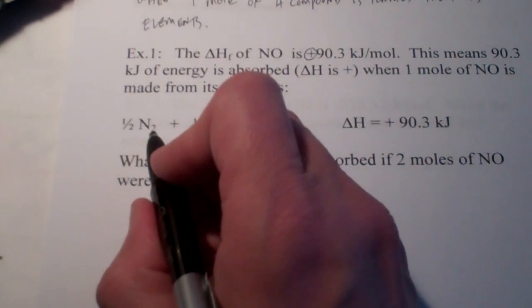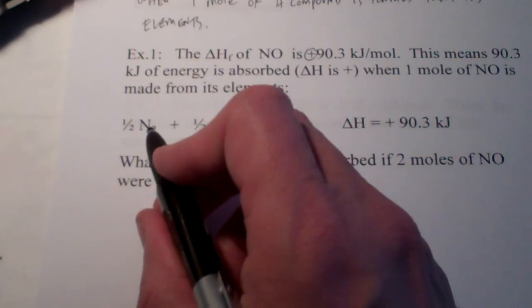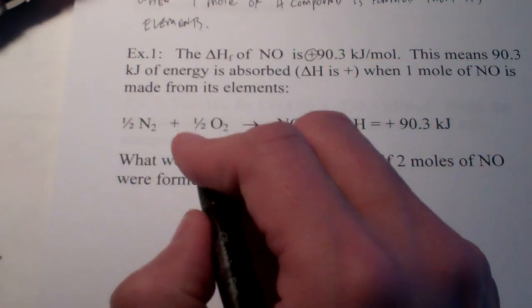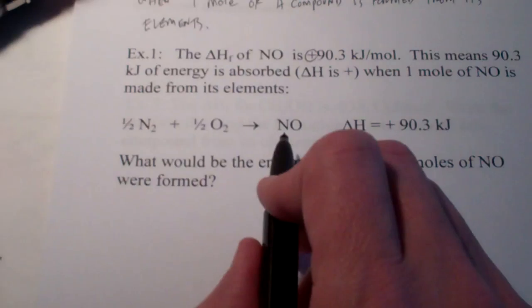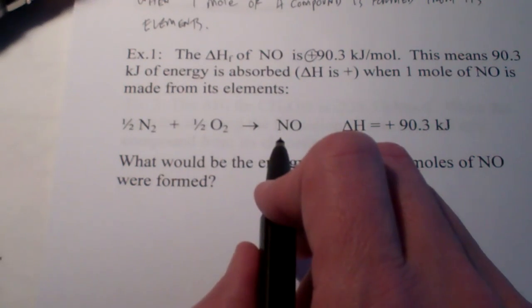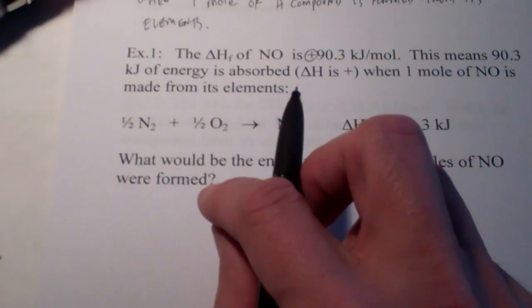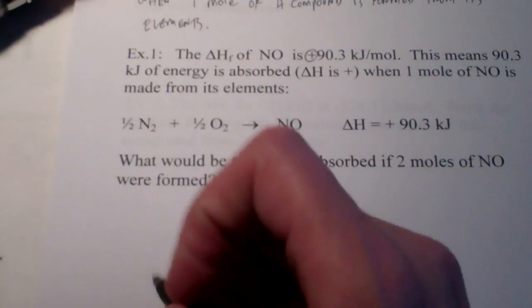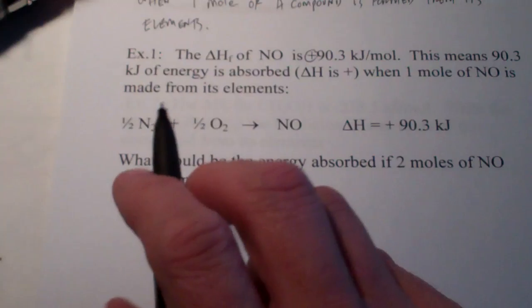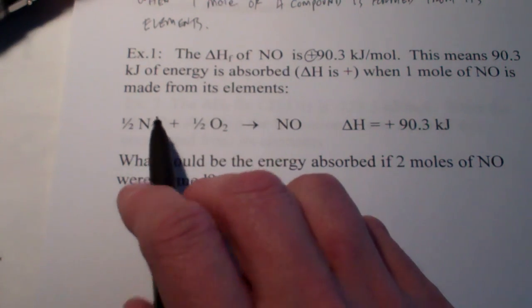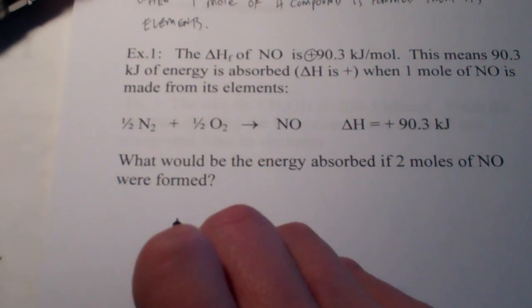Now, some might question, why did you write N2 and O2? Why not just N plus O? Remember, elementally, there are seven diatomic elements. We call them the Brinkelhoff elements, don't we? Bromine, iodine, nitrogen, chlorine, hydrogen, oxygen, and fluorine.